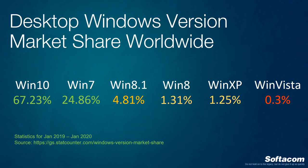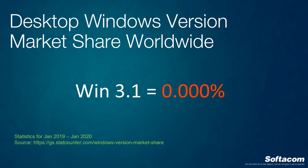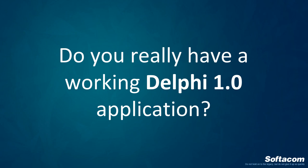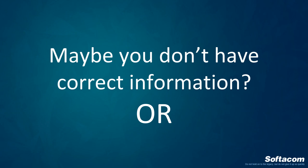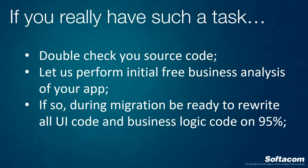I don't think so. Let's check the statistics on which Windows versions are currently installed on computers all over the world. You can see that even Windows Vista accounts for less than one percent. In our case, this means that the target operating system for Delphi 1 — Windows 3.1 — is installed on zero percent of computers and machines. So if you have requests like migrating a Delphi 1 application, maybe you don't have enough or correct information.